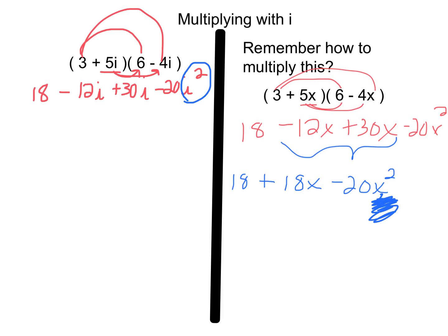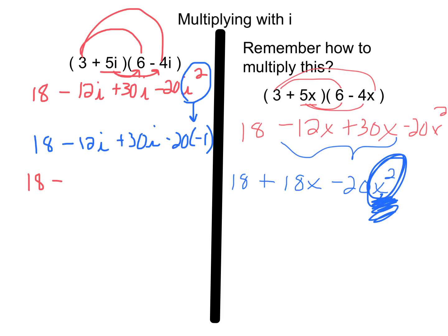Why do we evaluate i squared here but not the x squared? Because we didn't know what x was. But we know what i is — i is the square root of negative 1. So we can evaluate it. i squared is really equivalent to negative 1. So negative 20 times negative 1. Let's piece this all together: 18 minus 12i plus 30i.